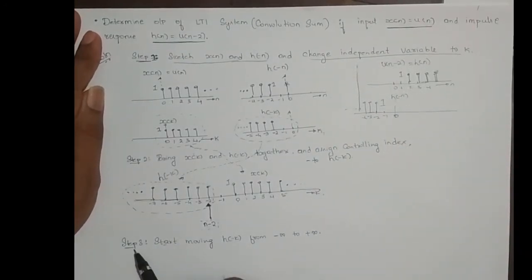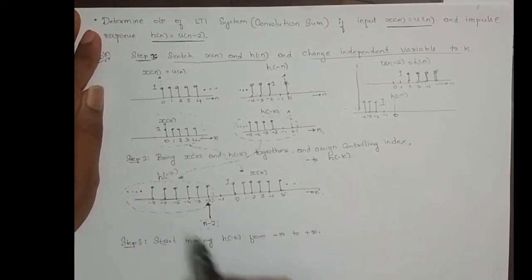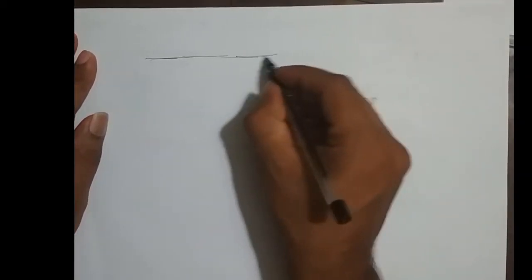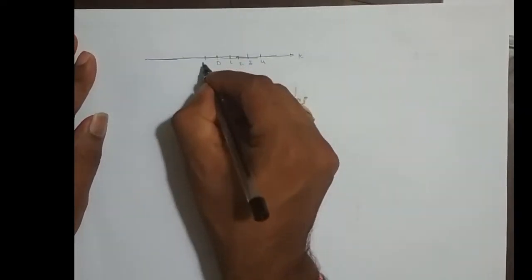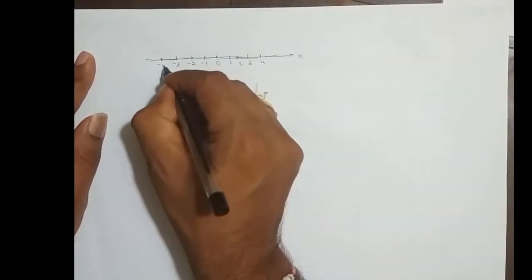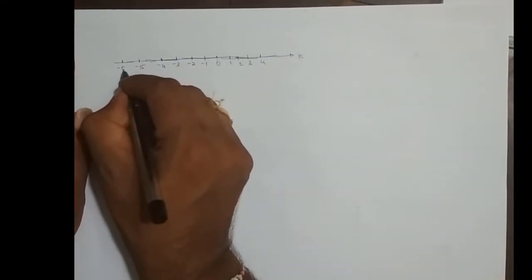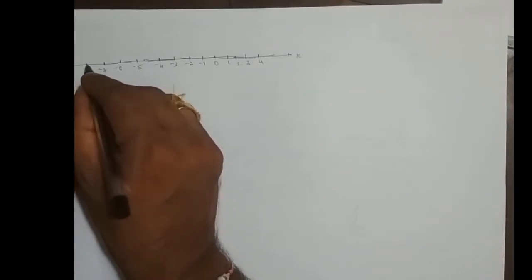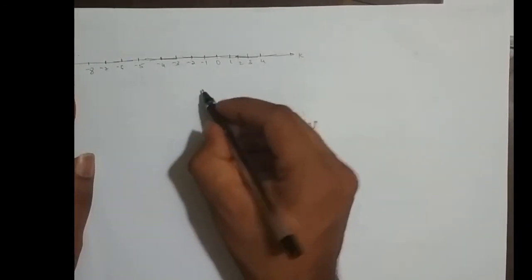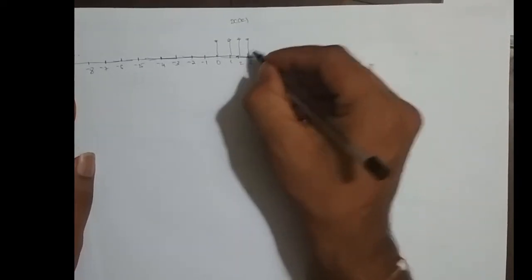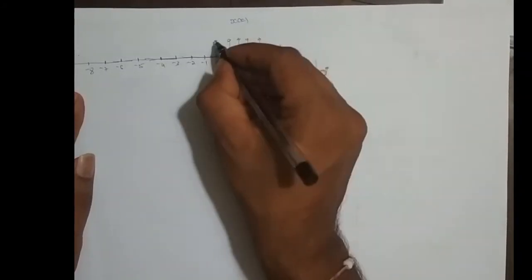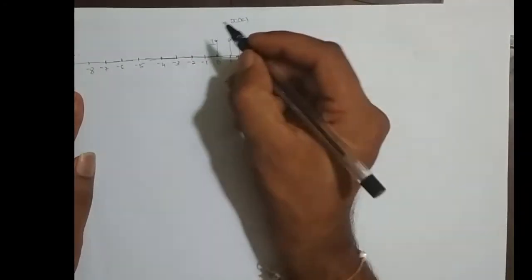Now we continue with step three: we need to start moving h[-k] from minus infinity to plus infinity. Let me plot the waveform. The k-axis goes: 0, 1, 2, 3, 4, and minus 1, minus 2, minus 3... down to minus infinity. The first sequence x[k] starts from 0 and goes to plus infinity with amplitude 1.